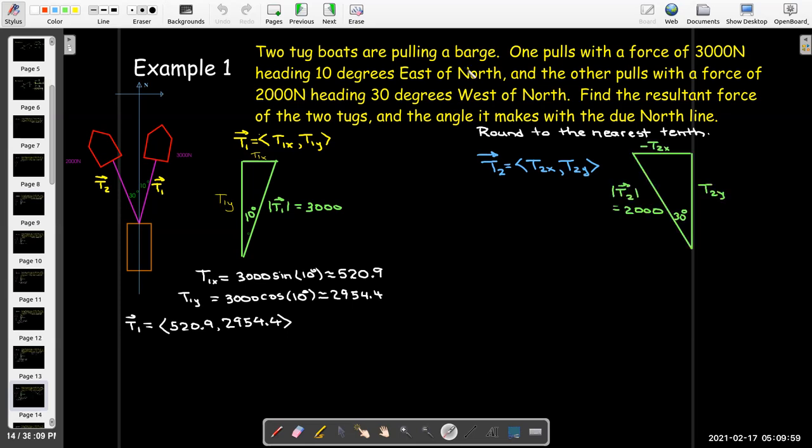Now, we have to be careful here. We agree that by convention, pulling to the left would be negative. So the horizontal component for T2 should be negative. Whatever value I solve from this triangle, it'll give me a positive number, but I'll have to change the sign when I write it down as a component, because it's pulling in the negative direction.